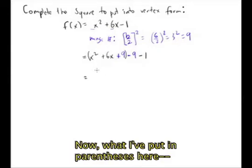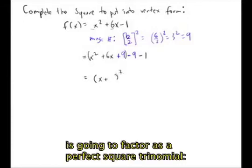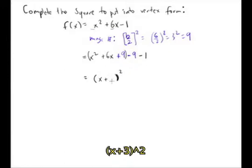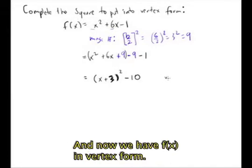Now what I've put in parentheses here, x squared plus 6x plus 9, is going to factor as a perfect square trinomial, x plus 3 squared. And then the negative 9 and the negative 1 are going to make a negative 10. And then now we have this in vertex form, f of x equals x plus 3 quantity squared minus 10.